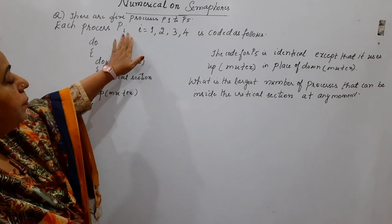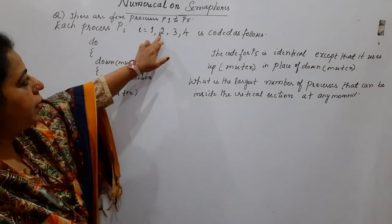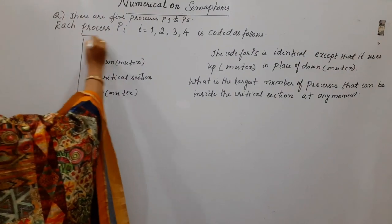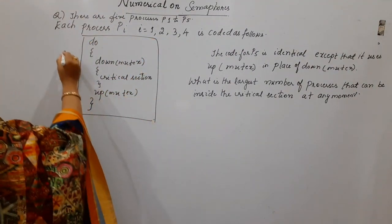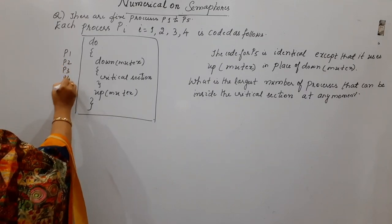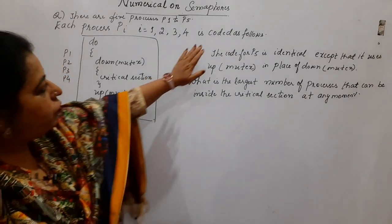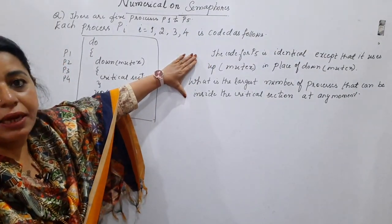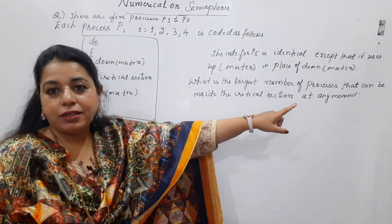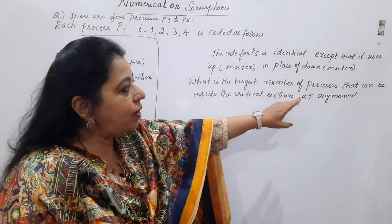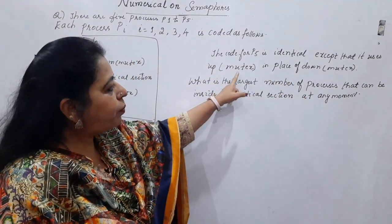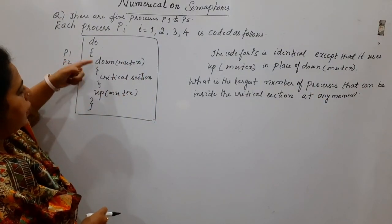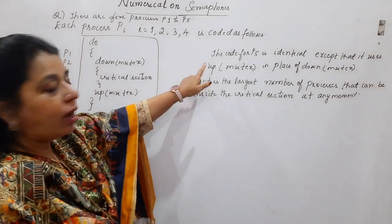Each process P1 through P4 follows the same code. The numerical says that this is the code which these 4 processes — P1, P2, P3, and P4 — are following. The code for P5 is not mentioned directly; instead, it is mentioned in the statement that the code for P5 is identical except that it uses up on mutex in place of down on mutex. So where you have down on mutex, P5 makes use of up on mutex.